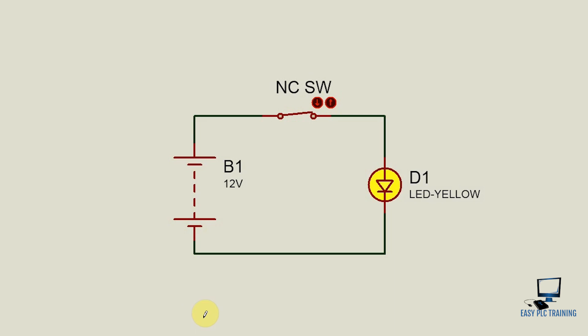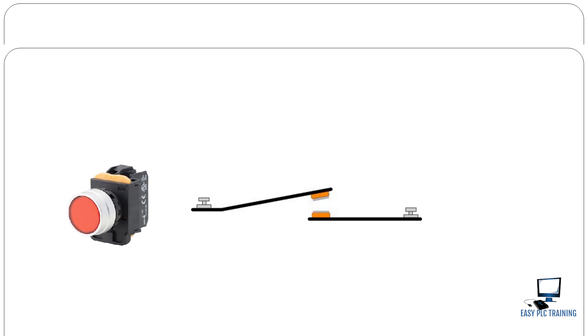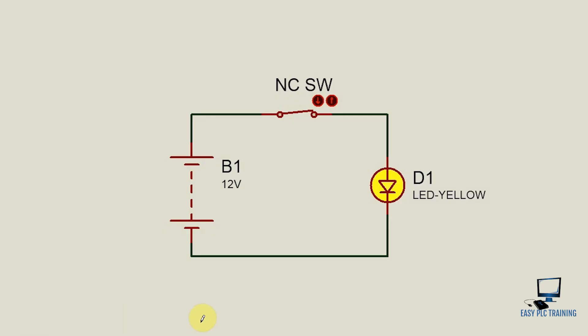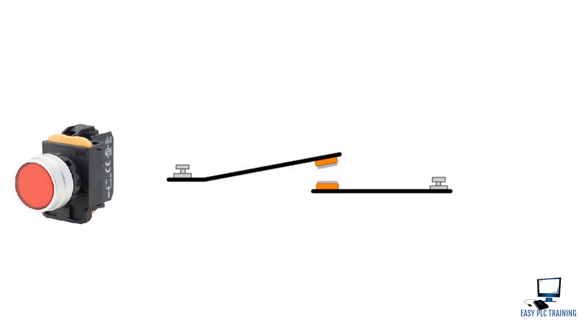In an NC (normally closed) type push button, we have a different scenario. In normal condition, when we don't press the button, the circuit is complete and the associated device — for example, a light — will be on. When we press the button, it opens the circuit, so the light will turn off. To repeat: in normally closed type, when not pressed the circuit is complete and the light is on; when pressed, the circuit opens and the light goes off.